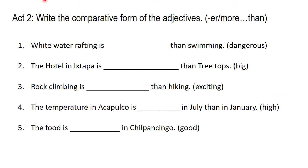Activity 2. Write a comparative form of the adjectives. Aquí sí tenemos el uso de -er, -more y -est. White water rafting is more exciting than swimming. The hotel in Estapa is more luxurious than treetops. Rock climbing is more dangerous than hiking. The temperature in Acapulco is higher in July than in January. The food is better in Chilpancingo.